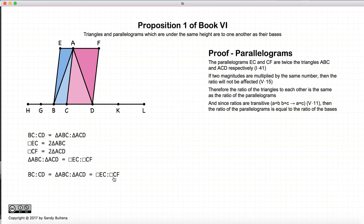And since the ratios are transitive, basically that means if A equals B and B equals C, then A equals C. Since it is transitive, that's proposition 11 of book five. We can just remove this from our equation and have that BC to CD is equal to the area EC to CF. And so here is the second part of our proof. The ratios of the areas of the parallelograms is equal to the ratio of their bases, assuming that the height is the same.